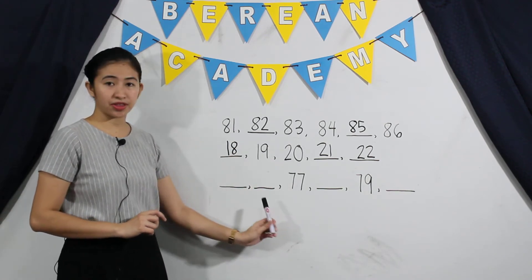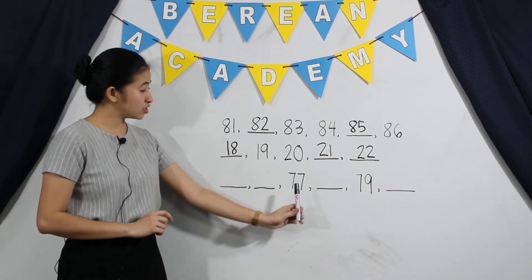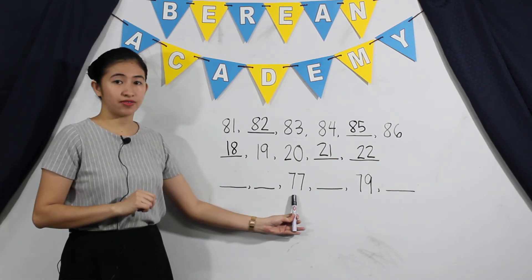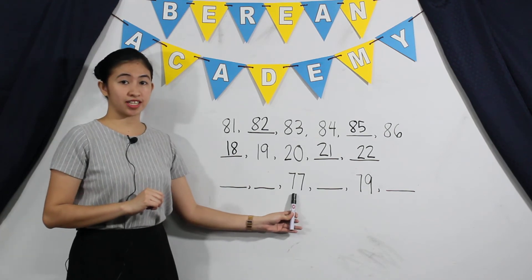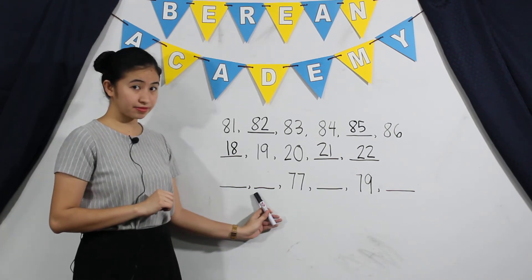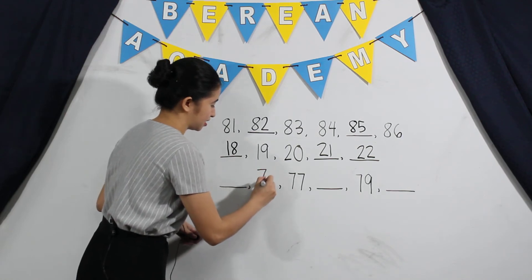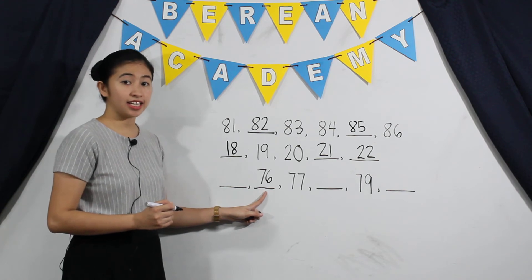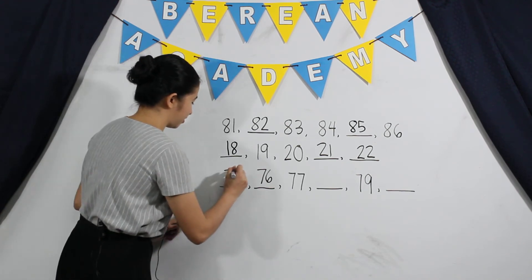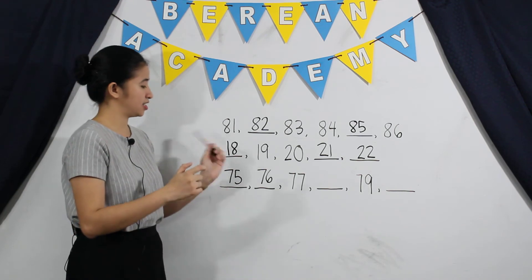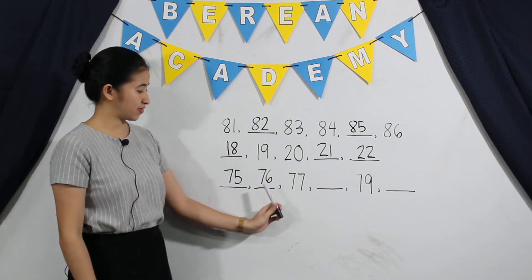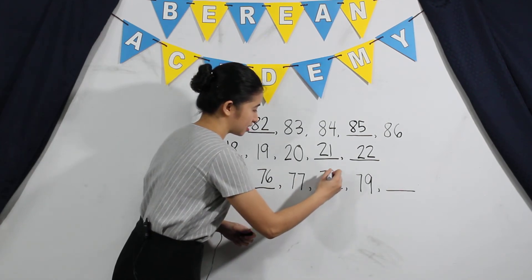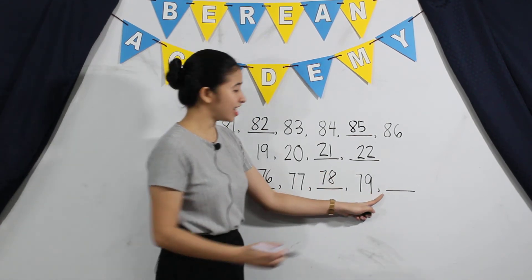And here, how do we find out the missing numbers? So first, you are going to identify the number before 77. So what is the number before 77? It is 76. And then identify the number before 76. It is 75. And then let's count up: 75, 76, 77, 78, 79, 80.